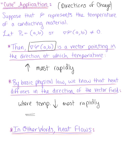In other words, in the direction of the vector field -∇φ. We can further conclude that heat flows down the gradient from hot to cold regions.